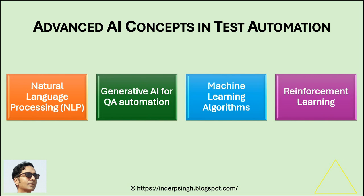Generative AI for QA automation uses NLP to interpret available test cases and translate them into automated test scripts. Using generative AI for software testing, automated test scripts can be created and maintained more efficiently. For example, generative AI can create automated test scripts with realistic test data, including boundary test data, which enhances test coverage.